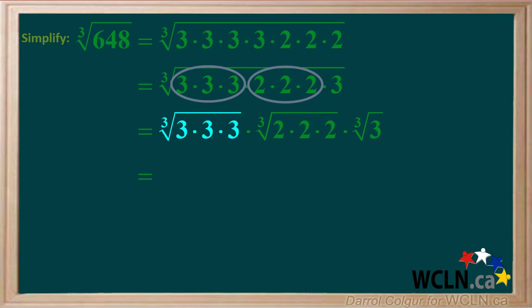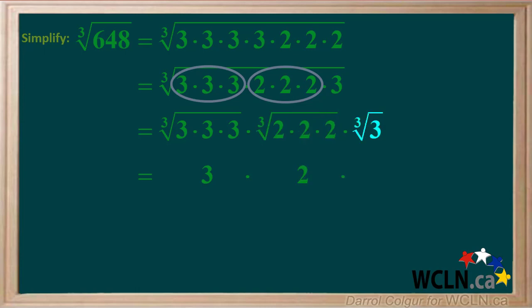The cube root of 3 times 3 times 3 is the same as the cube root of 3 cubed, or 3. And the cube root of 2 times 2 times 2 is the same as the cube root of 2 cubed, or 2. The cube root of 3 cannot be simplified, so we just copy it down.